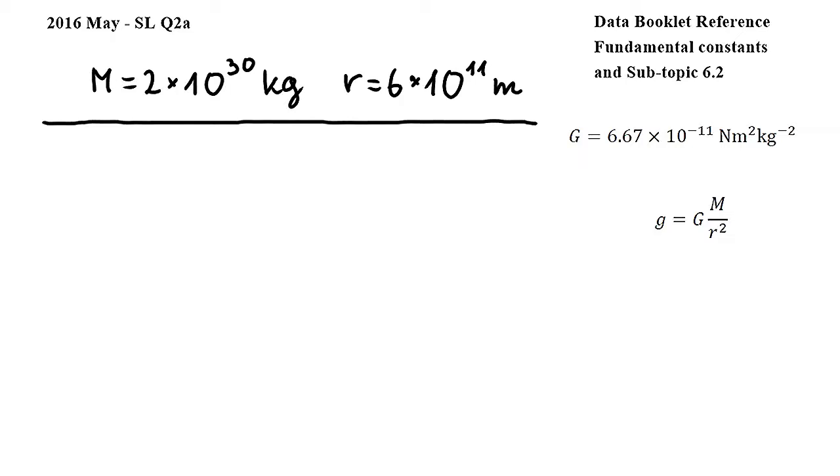We are going to use this equation from subtopic 6.2, where lowercase g is gravitational field strength, capital G is the gravitational constant, m is mass, and r is distance.